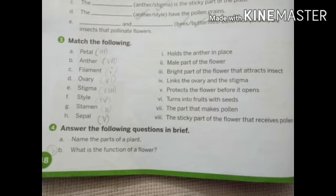Now question number 3: Match the following. First one, number A: Petal. I have written numbers on the right side of this petal, which is matching with number 3 - Bright part of the flower that attracts insects. Now number B: Anther, matching with number 7 - The part that makes pollen. Now number C: Filament, matching with number 1 - Holds the anther in place.